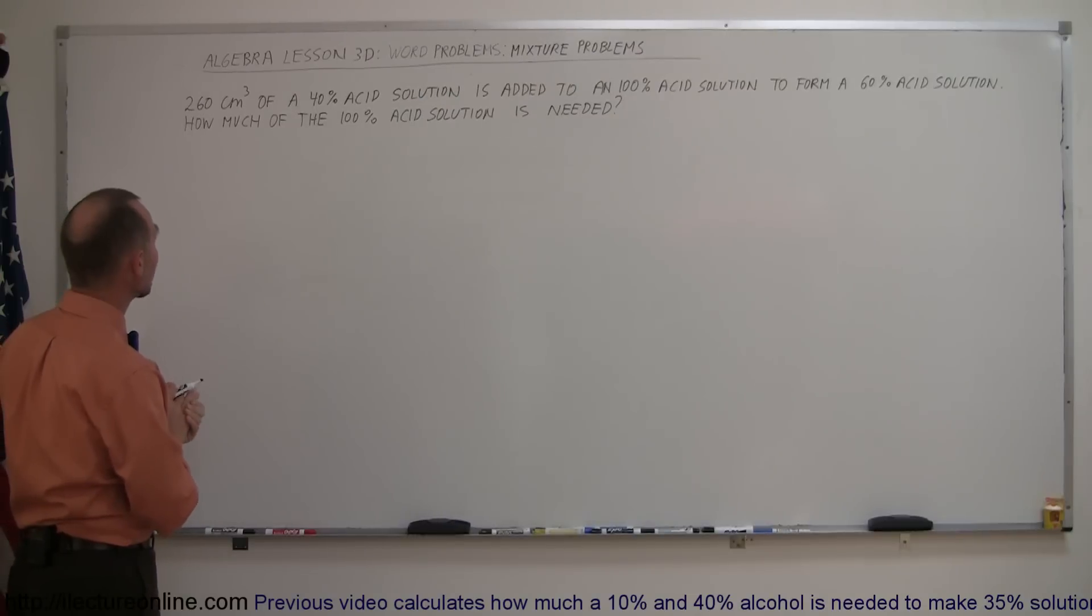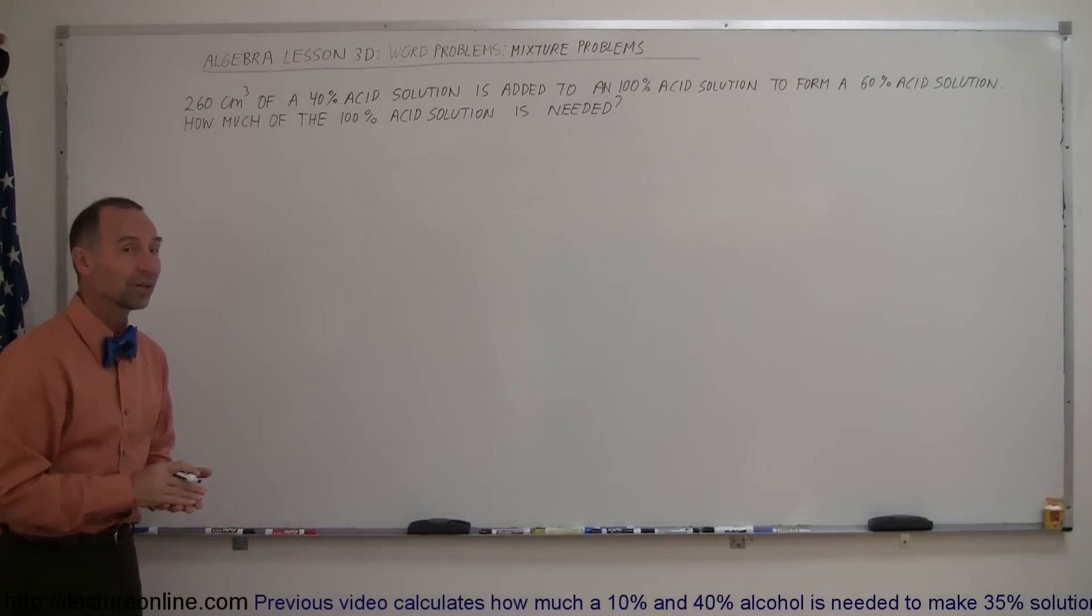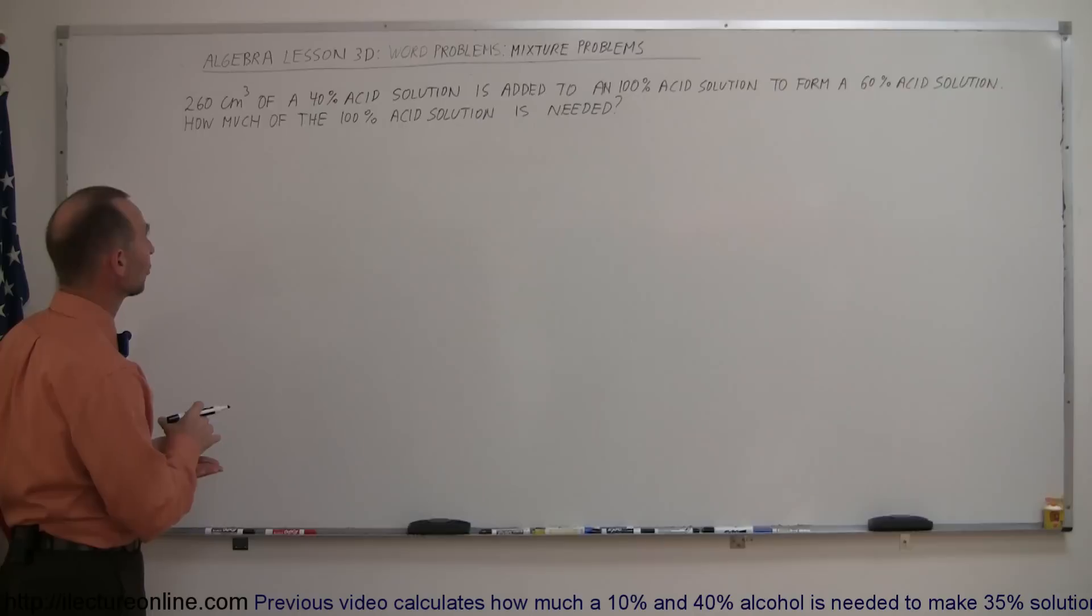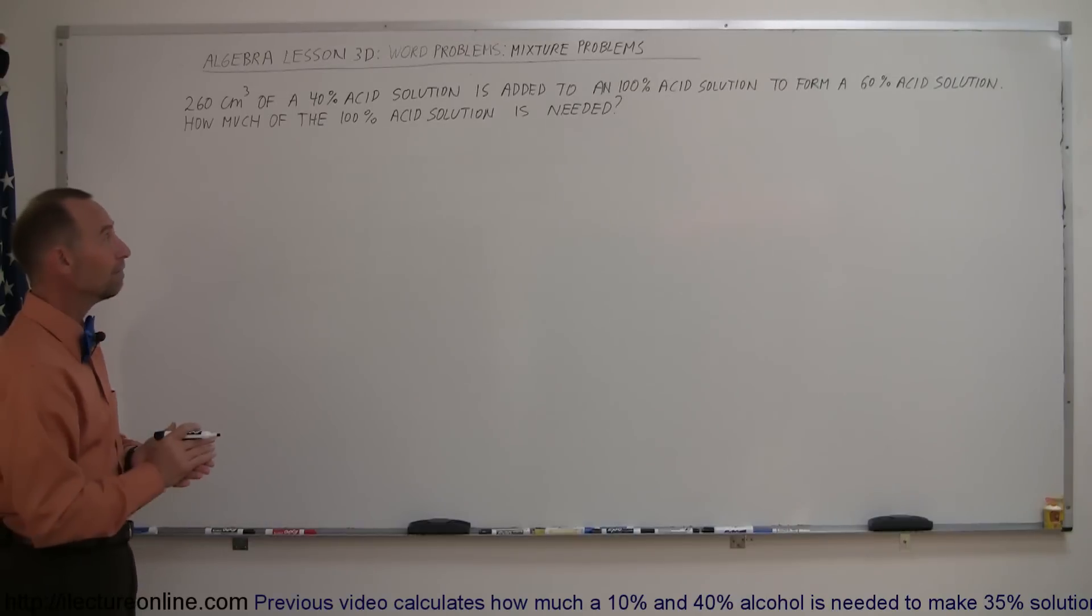The word problem here says that we have 260 cubic centimeters of a 40% acid solution, and it is added to a 100% acid solution to form a 60% acid solution. How much of the 100% acid solution is needed to accomplish that? It's a little bit different of a problem, but again the approach will be about the same.